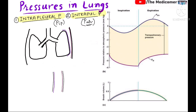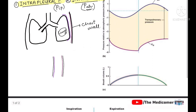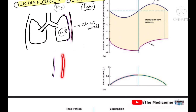First I'll be explaining intrapleural pressure with the help of this diagram. As you can clearly see, this is the lung tissue and this part is the chest wall. The violet structure is the visceral pleura and this one is the parietal pleura — these are the two layers of the pleura. The pressure in between these two layers is called the intrapleural pressure.